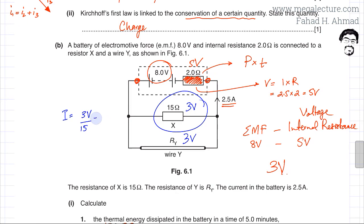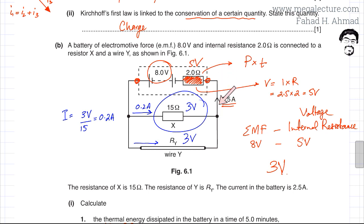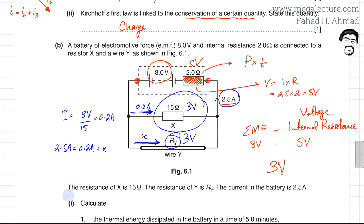The current through the 15 ohm resistor is 0.2 amperes. Applying Kirchhoff's first law — the total current from the battery is 2.5 amperes, which equals 0.2 amperes plus the current X through resistor R_Y. Solving: X = 2.5 − 0.2 = 2.3 amperes, so 2.3 amperes passes through wire R_Y.